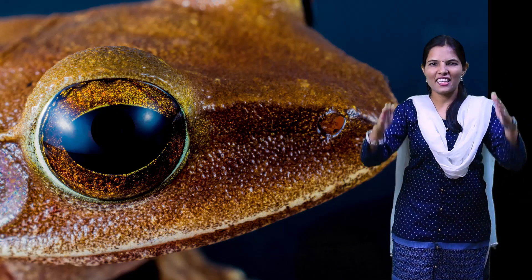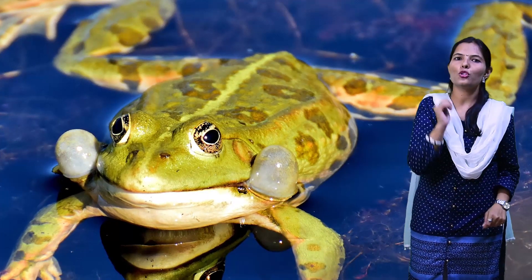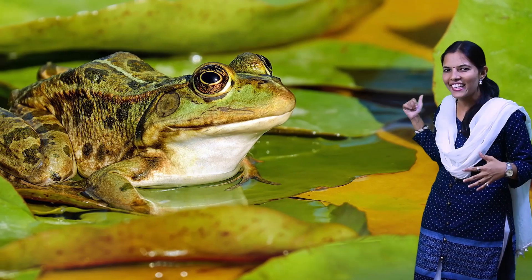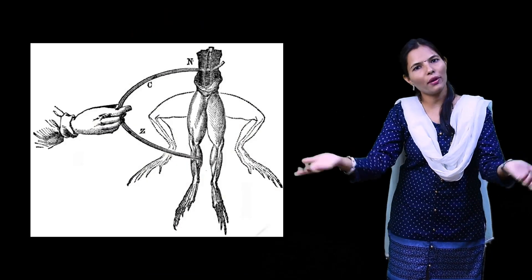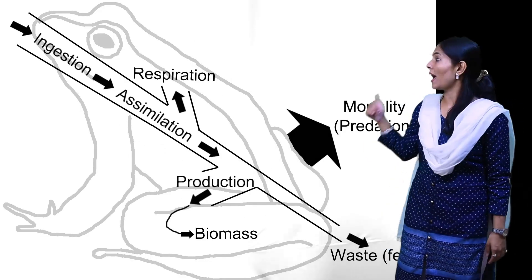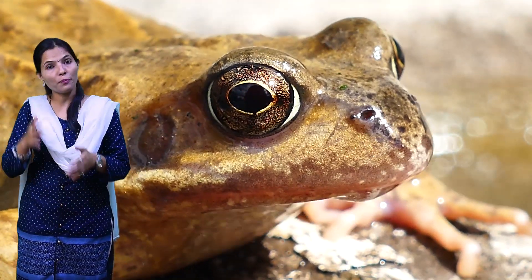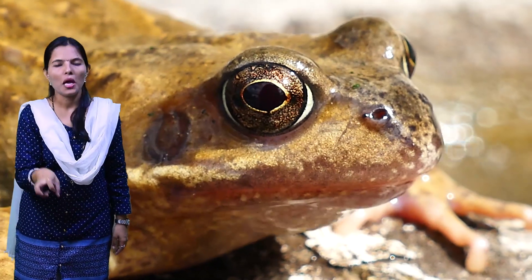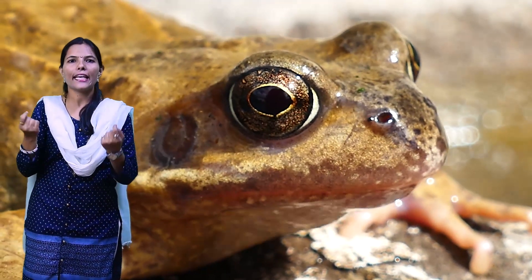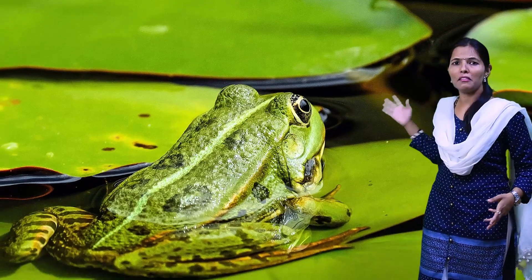The frog has a triangular head, which makes it easy to swim. It also has slippery, smooth skin. The frog is an amphibian — it can live both on the ground and in the water. When on land, it breathes using its lungs. When in water, it can absorb oxygen through its skin and tiny holes on its body. This is an amazing adaptation in the frog.